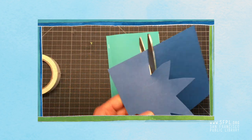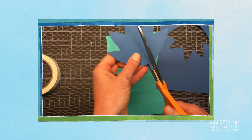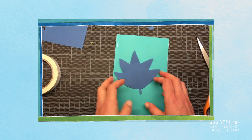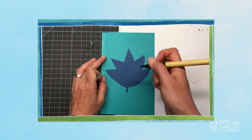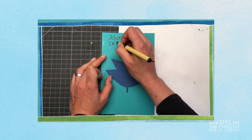And now I'm going to decorate. I'm cutting out a leaf shape here for the cover, and I'll glue it on with my glue stick. And last I'll just label the front.